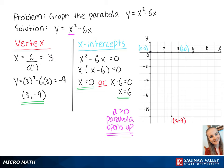Now we connect the points to graph the parabola to look like this. The axis of symmetry is the line that goes through the vertex at x equals 3. Now we have graphed and labeled our parabola.